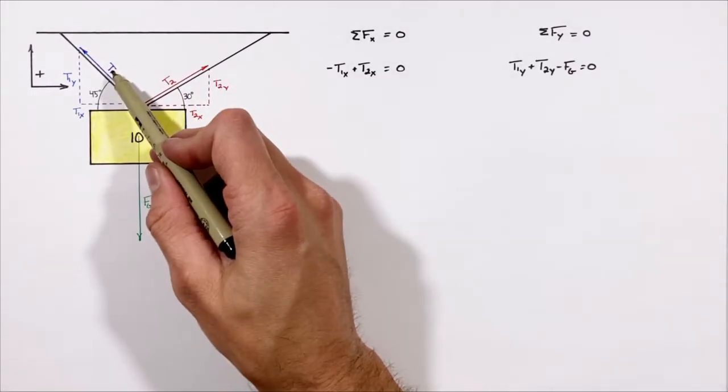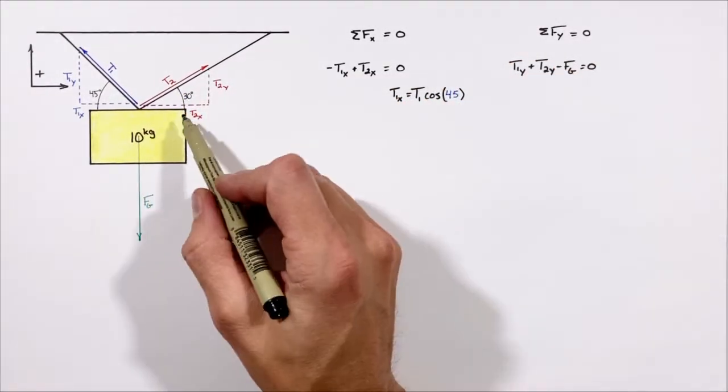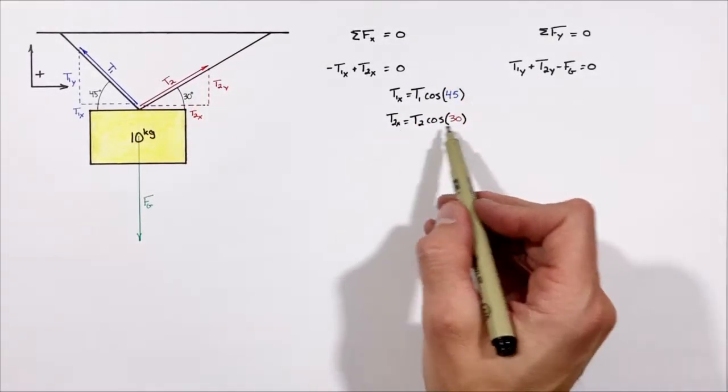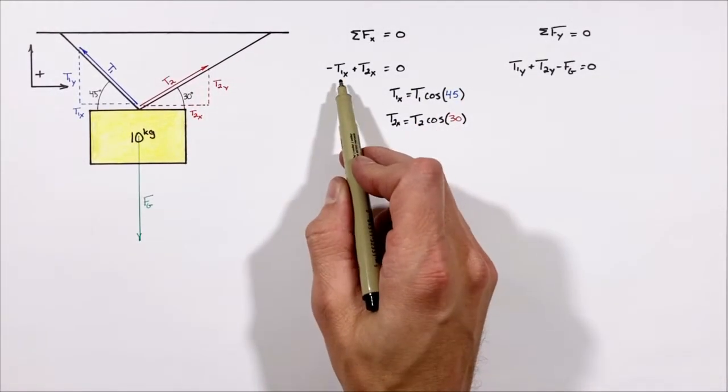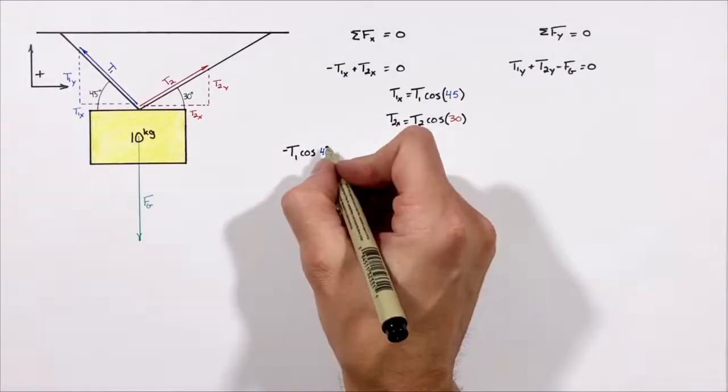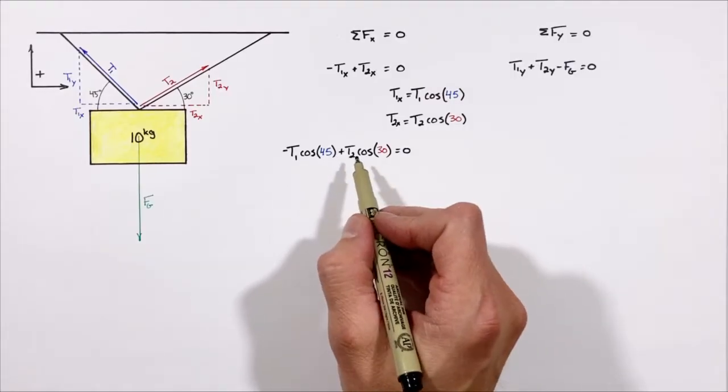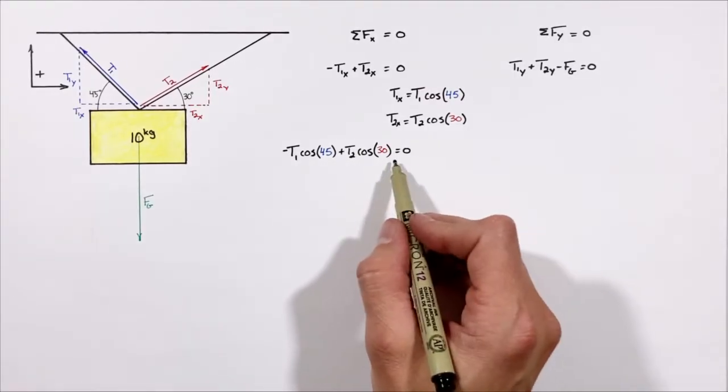First, relating t1x back to t1 and t2x back to t2, we can substitute these values into our expression up here and we come up with this expression relating t1 and t2 within the x-axis.